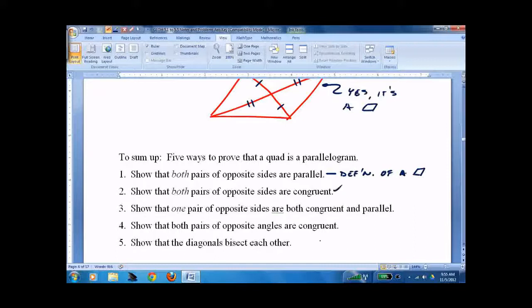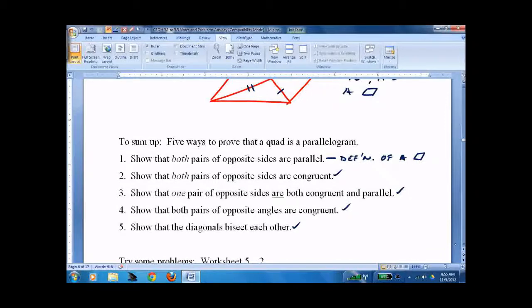Both pairs of opposite sides congruent. One pair is both congruent and parallel. Opposite angles and diagonals bisecting. That's it. Be ready. Good luck. Have a big look.